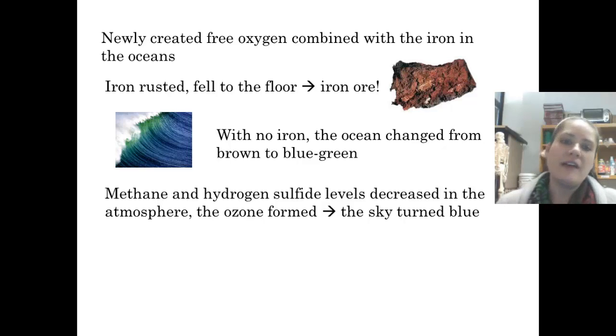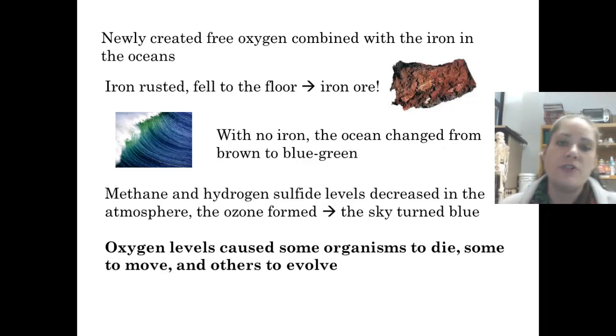The methane and hydrogen sulfide levels that were out in the atmosphere decreased and ozone formed. So ozone is just three oxygens hooked together. So O-O-O is ozone. That ozone formed, when the ozone formed, that's that layer around our Earth, and now our sky turned blue. So all the levels of yucky stuff came down, and we got kind of a little bubble around ourselves. And so now we've got blue oceans and blue skies.